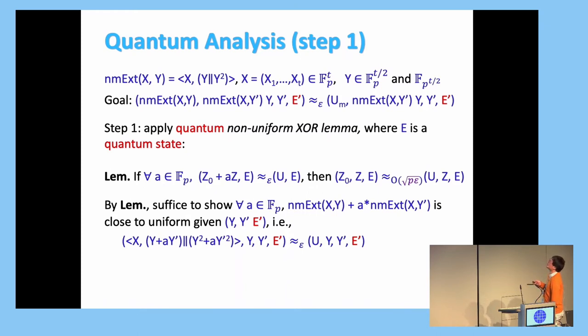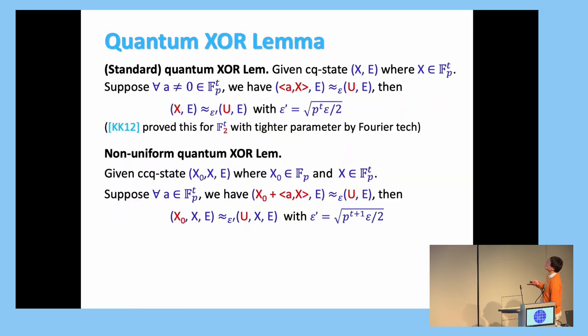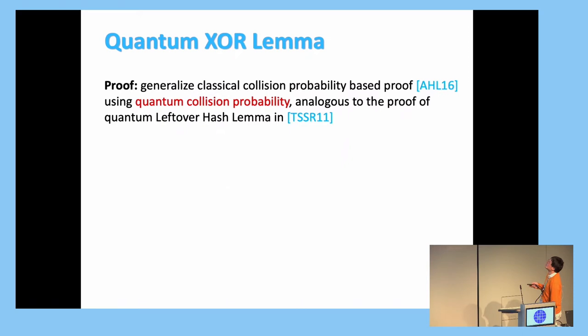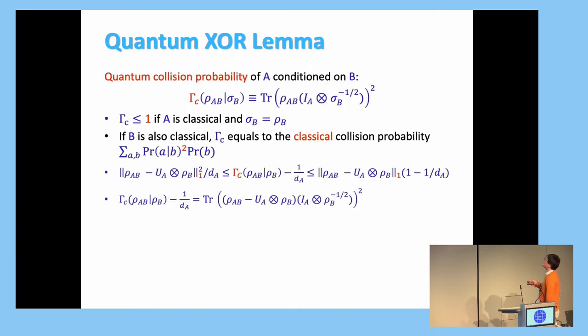So what about quantum setting? Well, first step we want to do the non-uniform XOR lemma again. Well, there is no quantum-proof non-uniform XOR lemma proof, so we prove it also. Actually, we prove two XOR lemmas. One is the standard version where there is no two registers X_0 and X. This is just X. And you say X inner product with A is close to uniform and X is close to uniform. Oh, sorry. The quantum part is now the information E here is all quantum states. Yeah. So we prove those two XOR lemmas. And how we prove the quantum XOR lemma is by generalizing a classical proof based on collision probability. So we use a quantum collision probability, which is defined by TSSR data.